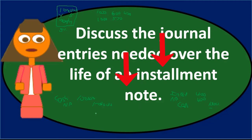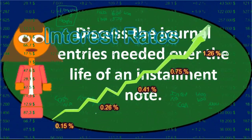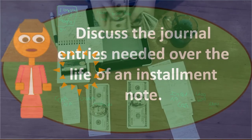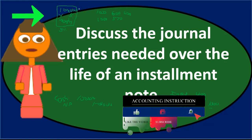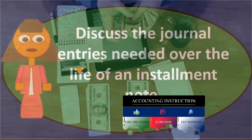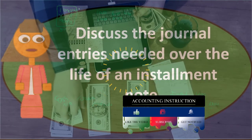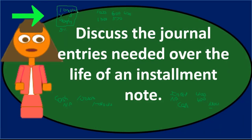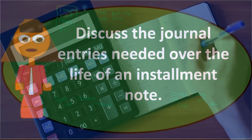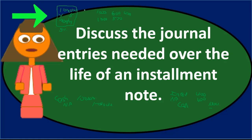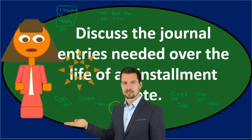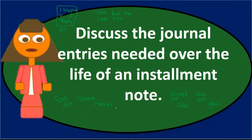Note the difference between an installment note and a bond: with a bond, you pay only interest throughout the period and then pay off the full original principal at maturity — that's the balloon payment. The bond payments are fixed because the principal never decreases. With an installment note, we reduce principal with every payment, so there is no balloon payment at the end. By the last payment, the note is completely gone from the books.